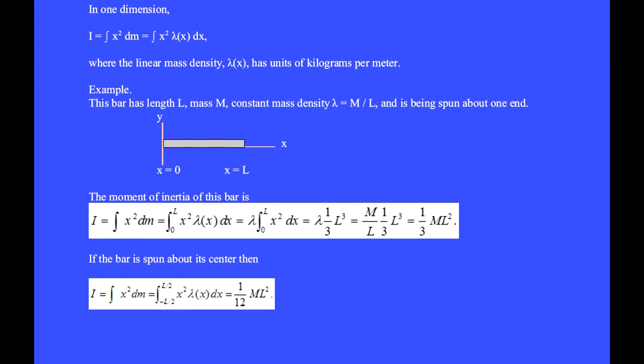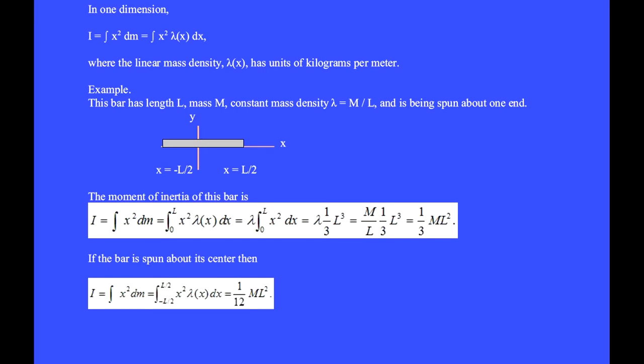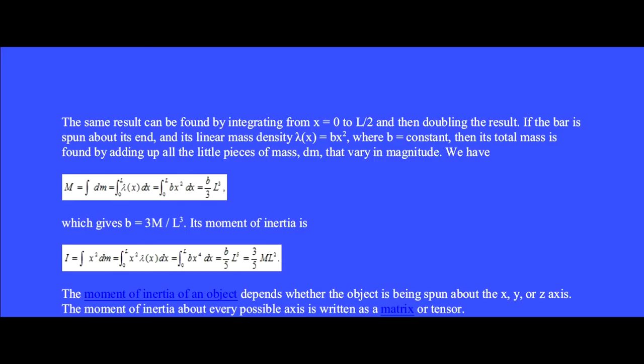If the bar is spun instead about its center, then we integrate from minus l over 2 to plus l over 2, and get one twelfth ml squared. You can tell with your own muscles that it's easier to spin a bar about its center than about its end. The same result can be found by integrating from x equals 0 to l over 2 and then doubling the result.